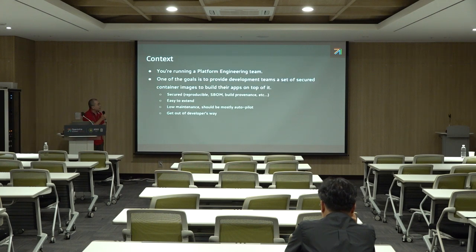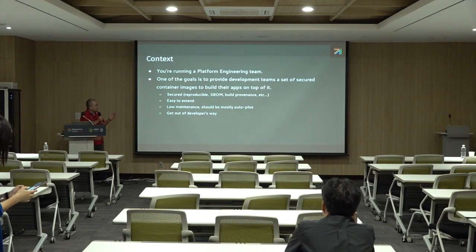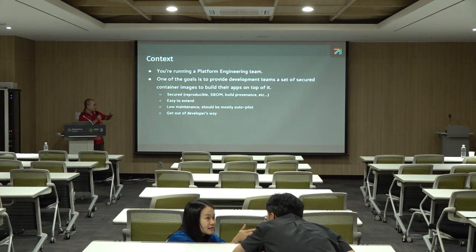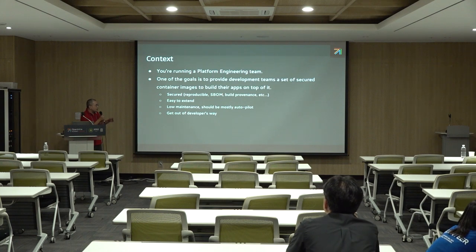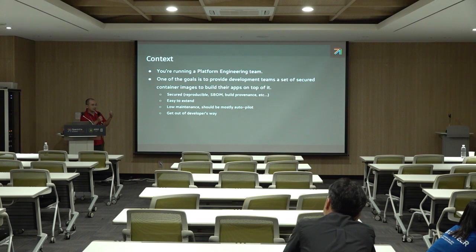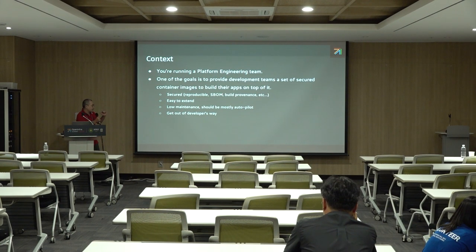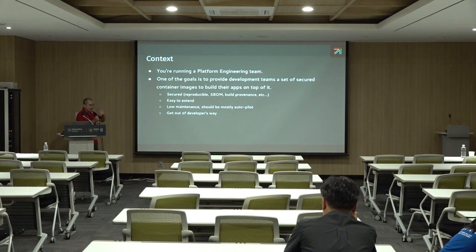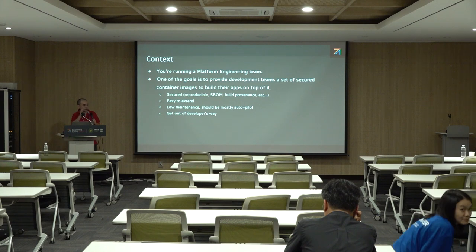I'm going to talk about the context we have at VB Bank. I'm running the platform engineering team, and our goal is to provide the development team with a set of secure images so that they can build applications on top of them. The goals for the base image are: they have to be secure, reproducible, have an SBOM (software bill of materials), provide build provenance so you can confirm it really came from us, be easy to extend so app teams can add dependencies they need, and must be low maintenance — ideally almost auto-piloted so we don't have to touch anything. It has to get out of the developer's way so they don't have to care about vulnerabilities in the base image — they can focus on building their application, and we'll handle the base image ourselves.